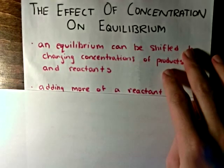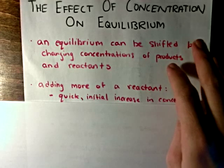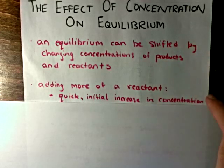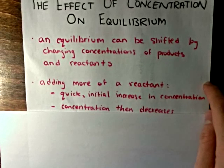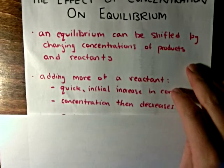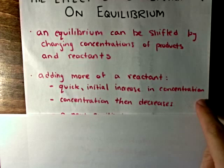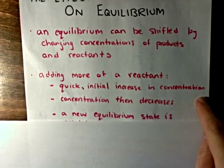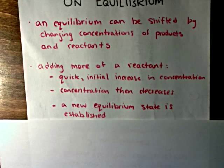Let's say that we want to add more of a reactant. What will happen is that once we add it, there will be a quick and initial increase in the concentration of that reactant. And then very shortly after, the concentration of that reactant will decrease because it will begin reacting with the other reactants. And after this happens, a new equilibrium state will be established.